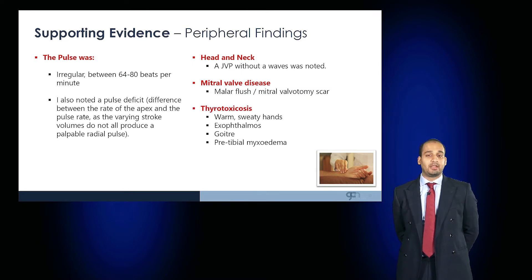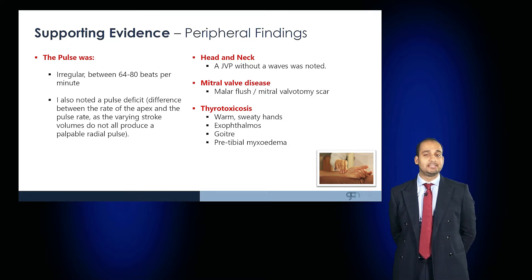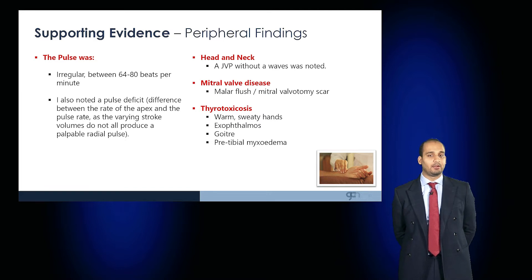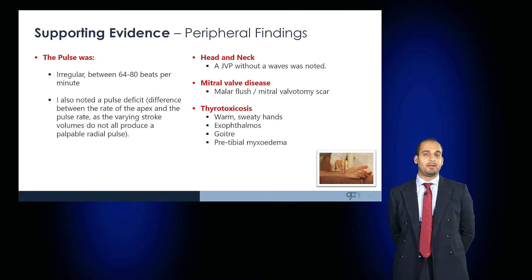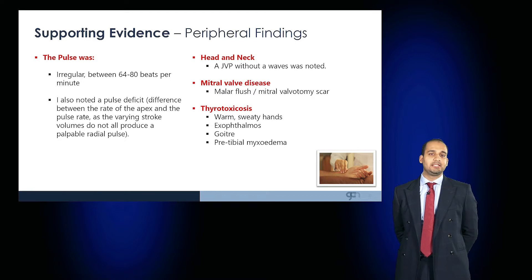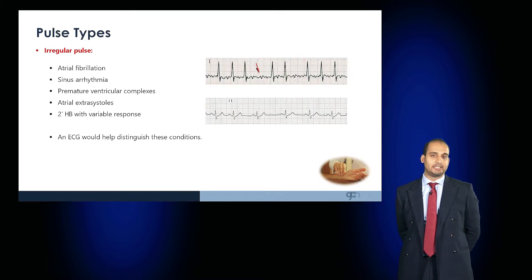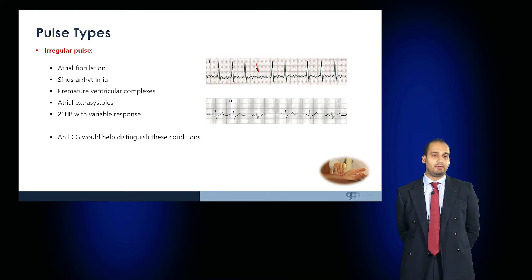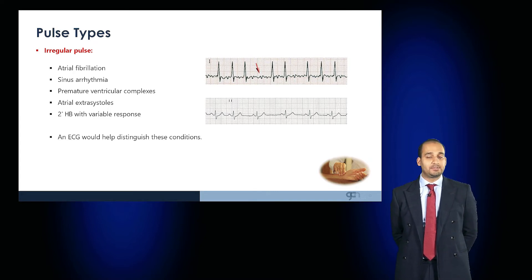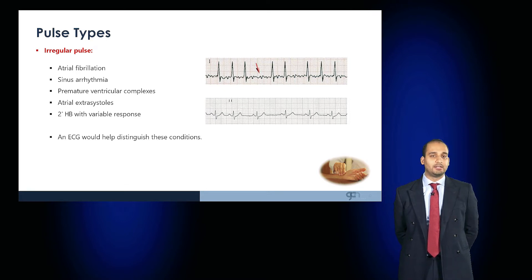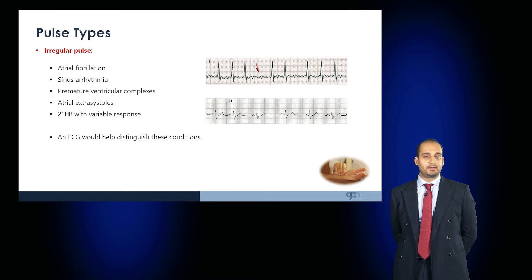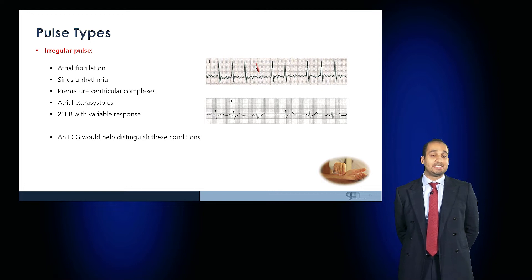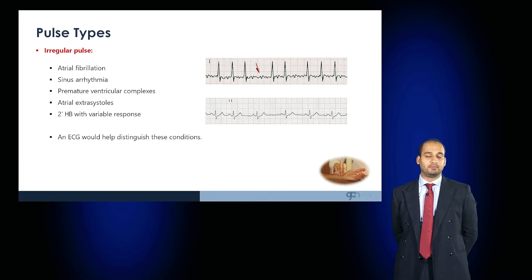Regarding precipitating factors, if the patient is thyrotoxic they may appear warm with sweaty hands, and signs of Graves' disease such as exophthalmos, a goitre, or pretibial myxoedema may be present. It's important to recognise that not every irregular pulse is atrial fibrillation. Other differentials include sinus arrhythmia, premature ventricular complexes, and second-degree heart block with variable response — an ECG would discern these conditions.